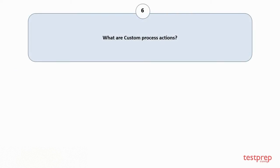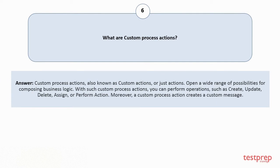Question number 6: What are custom process actions? Custom process actions, also known as custom actions or just actions, open a wide range of possibilities for composing business logic. With such custom process actions, you can perform operations such as create, update, delete, assign, or perform action. Moreover, a custom process action creates a custom message.